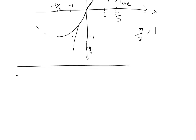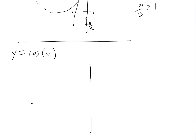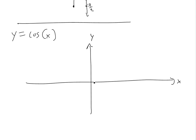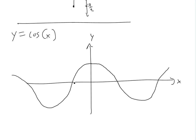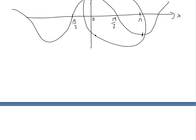Now let's look at cosine and tan. So if we have y equals cosine x — similarly, we'll graph this one. Again, it's not a one-to-one function, so we have to restrict the domain. We can't pick the section from negative pi over 2 to pi over 2 because it's going to cross and not be one-to-one. Most textbooks usually pick from 0 to pi.